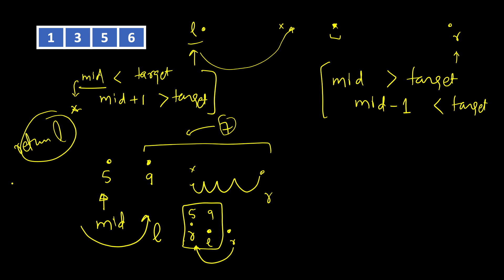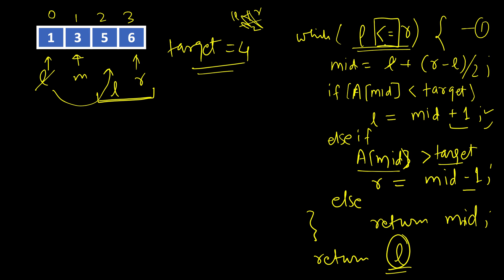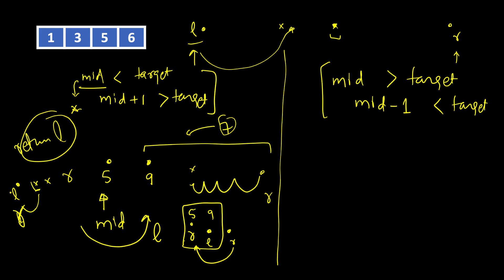With two gaps between l and r: mid is at the larger element, so r shifts left until l and r converge. Because our loop condition is l less than or equal to r, we continue — mid equals that same position again, still greater than target, so r moves further left. Whether l and r are at the same position, one apart, or further apart, we eventually return l in all cases for this scenario.